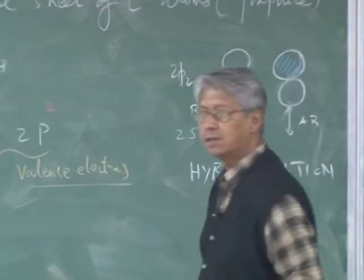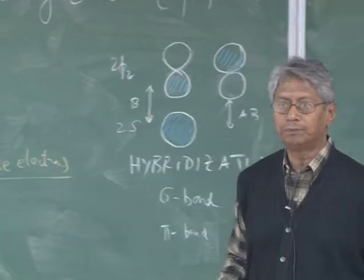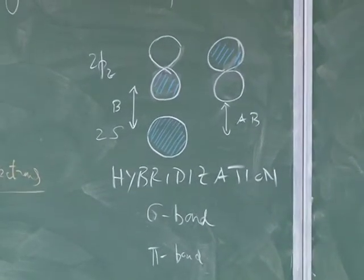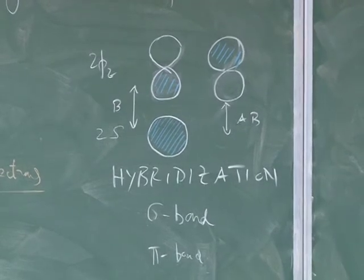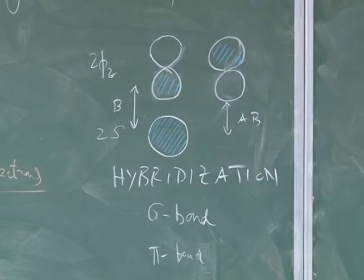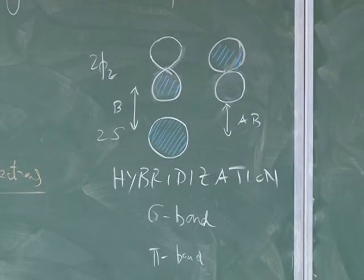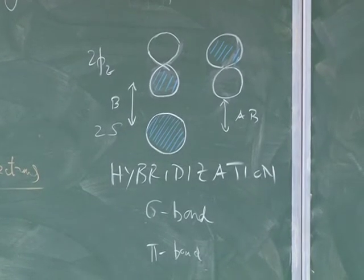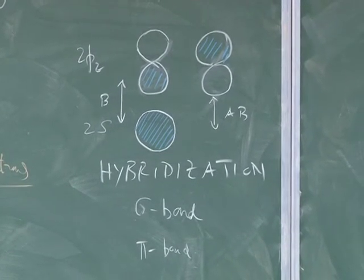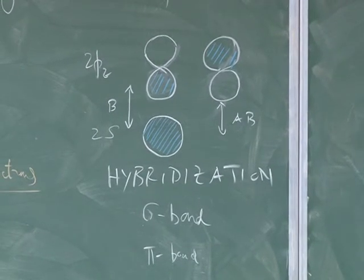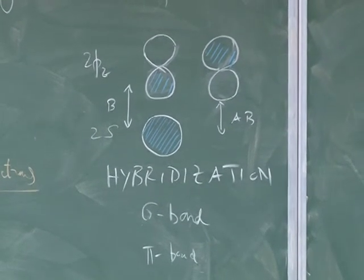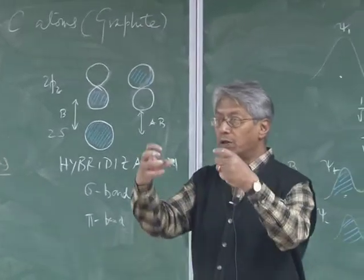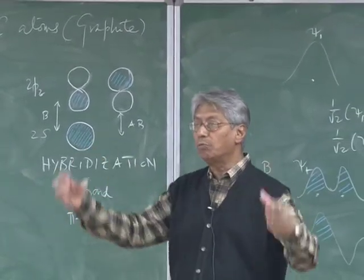In graphene and fullerene you have sp2 hybridized carbon atoms. Now, you construct graphene from two carbon atoms and keep adding more and more.